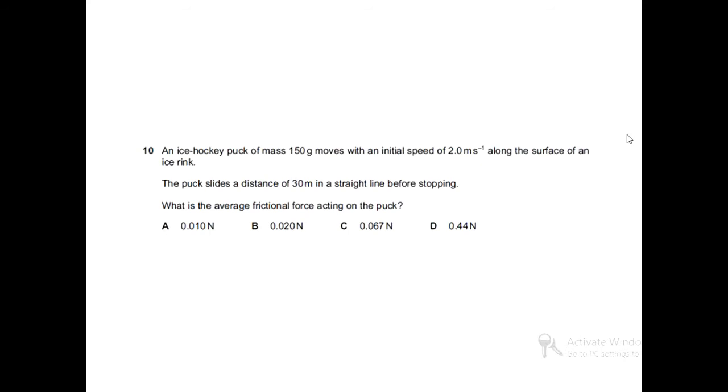After applying this equation, we will get acceleration in negative sign. It means that the puck is retarding. And after calculating the retardation, to calculate the average frictional force acting on the puck, we will apply the equation F equals MA. And mass is given that is 150 gram that needs to be converted into kg and mass in kg will be multiplied with the deceleration calculated before.